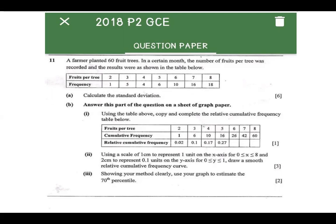It reads: a farmer planted sixty fruit trees. In a certain month, the number of fruits per tree was recorded and the results were as shown in the table below. In this table, we have the number of fruits per tree and the frequency or the number of occurrences. So one tree had two fruits, five trees had three fruits, four trees had four fruits, six trees had five fruits, ten trees had six fruits each, and so on and so forth.